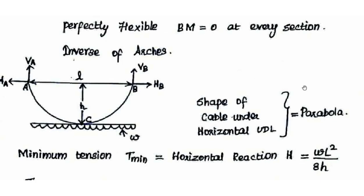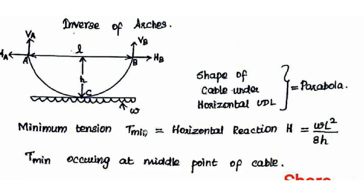If two concentrated loads act, the shape changes to a trapezoidal shape. Next, minimum tension is equal to the horizontal reaction, and this occurs at the midpoint of the cable — that is, at the sag or dip.